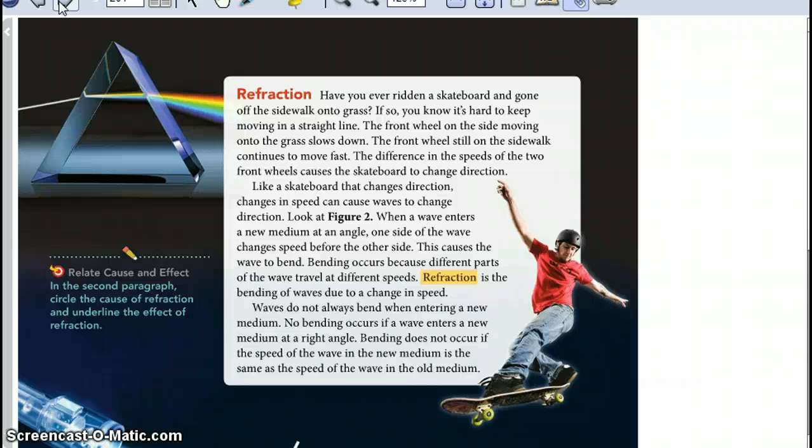Like a skateboard that changes direction, changes in speed can cause waves to change direction. Look at figure 2. When a wave enters a new medium at an angle, one side of the wave changes speed before the other side. This causes the wave to bend. Bending occurs because different parts of the wave travel at different speeds. Refraction is the bending of waves due to a change in speed.